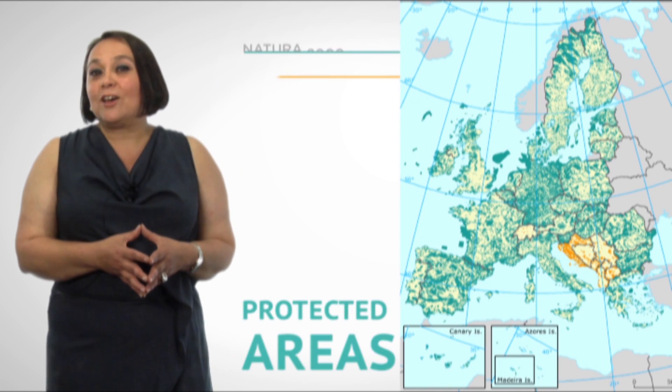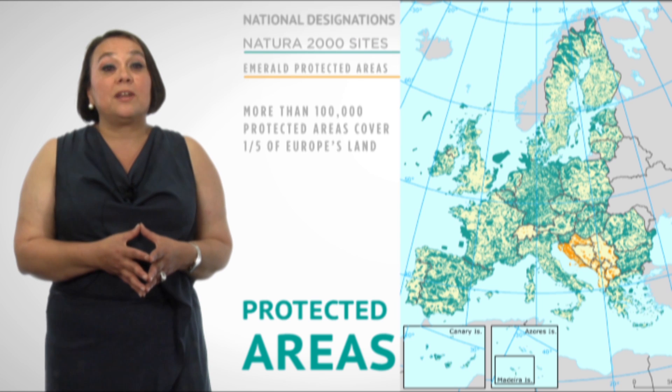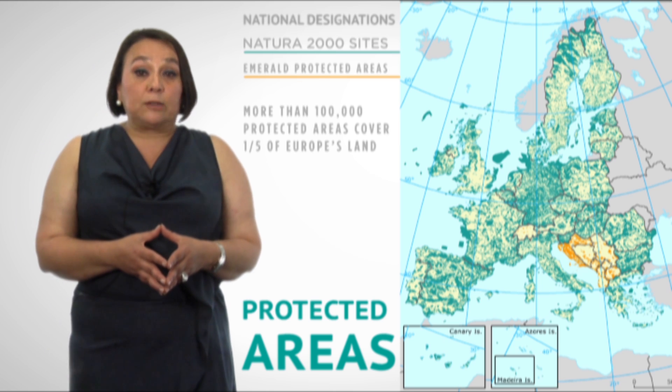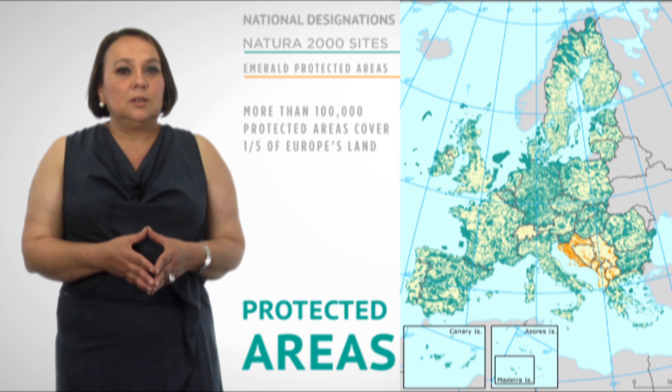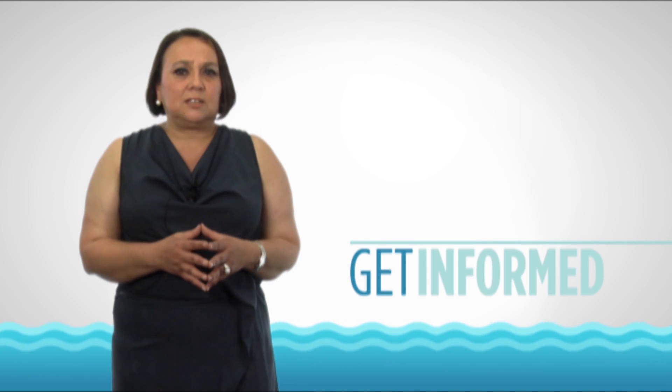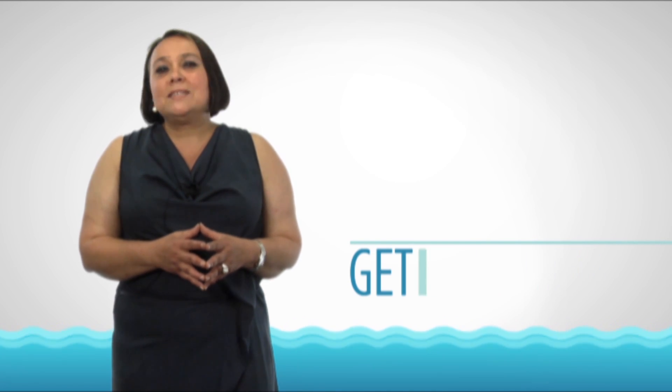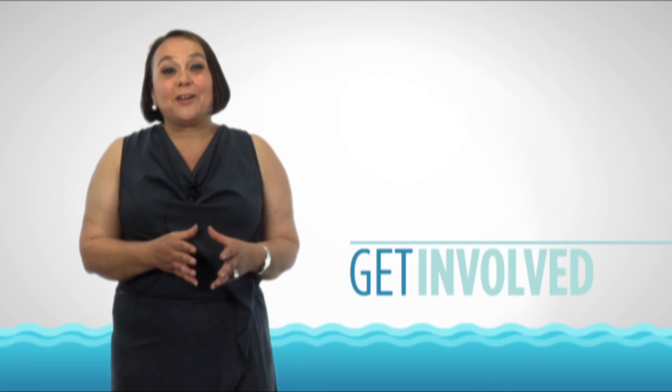In Europe, we have more than 100,000 protected areas covering more than a fifth of its land area. Europe's Natura 2000 and Emerald Networks are unique in the world, forming an international coordinated network of protected sites. This means there is for sure a protected area near you.